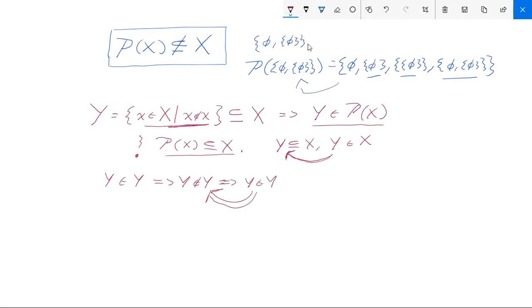So we've obtained our contradiction, and therefore we know now that if we look back, well, which part of this argument did we make an assumption that we might not have had to make? The only place was assuming that the power set of X was contained in X itself.